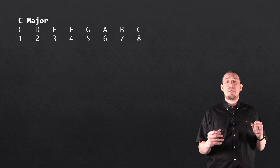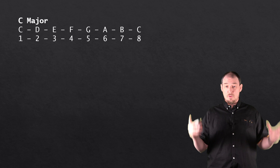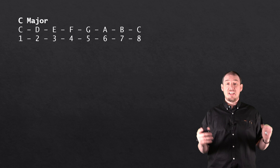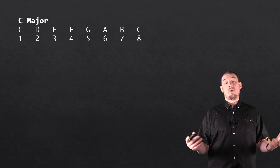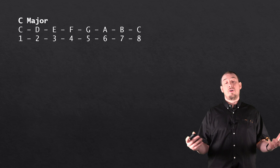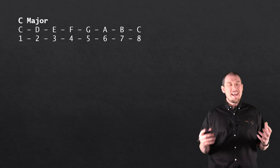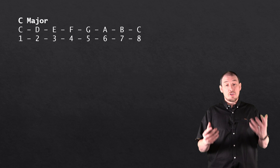The easiest way to think of the major scale is in the key of C — in C major there are no sharps, no flats. If you're looking at a piano it'd be all the white keys, none of the black ones. Very simply: C D E F G A B C. As blues guitar players we never play the major scale, but we have to understand it because we need to be able to talk to other musicians — everything revolves around it, it's kind of our language.